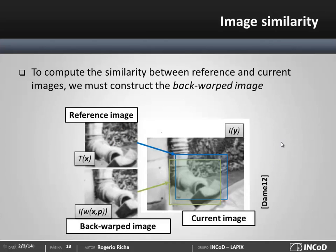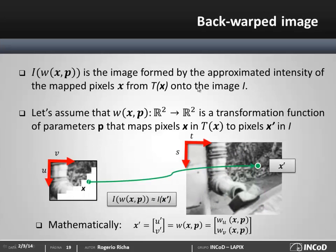To compute the similarity between the reference and the current images, I need to build the back-warped image. The back-warped image is constructed by estimating the intensities of each pixel from x mapped onto the current image. To build this back-warped image, I need to project every pixel x from my reference image onto the current image according to the transformation parameters, and then interpolate the intensity associated with each mapped pixel. Using the transformation function w, we can transform pixels from the reference coordinate frame, represented by x, and find their positions in the current image, represented by x', according to the function w of parameters x and p.